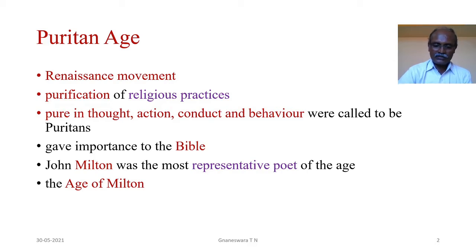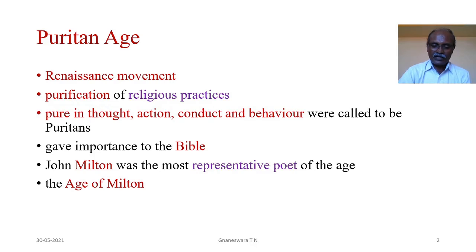The Renaissance movement was accompanied by a moral awakening in England during the 16th century. It advocated the purification of religious practices. Those who were pure in thought, action, conduct, and behavior were called Puritans. They gave more importance to the Holy Scripture, the Bible, as an authority in matters of religious practices and individual conduct. Since Puritans became a dominant force in England during this period, this period is called Puritan Age.